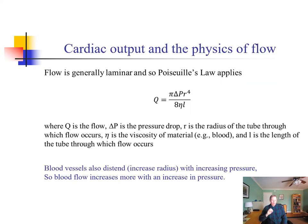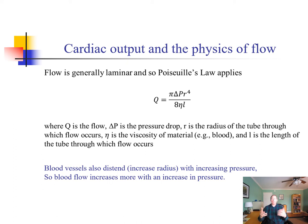Blood flow can be modeled as laminar, similar to pulmonary flow. The key relationship here is that the pressure change is inversely related to the fourth power of the radius. This means that as the radius drops, the pressure required is exquisitely sensitive to that change. Blood vessels do distend — increasing their radius as pressure rises — which provides some adaptiveness to this relationship.